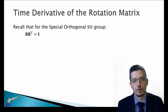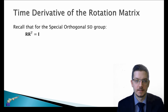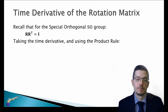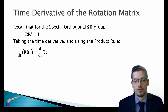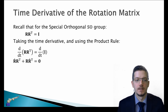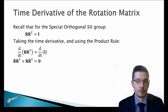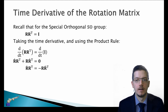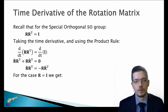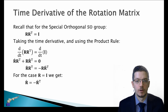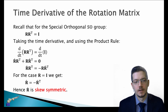Recall that for the special orthogonal group, R times R transposed is the identity. Taking the time derivative and using the product rule, we get d/dt of R times R transposed equals d/dt of the identity. So R_dot times R transposed plus R times R_dot transposed equals zero, since the derivative of the identity matrix is zero. Rearranging, we get R_dot R transposed equals negative R R_dot transposed. For the case where our rotation is the identity matrix, we get R_dot equals negative R_dot transposed, meaning the time derivative of the rotation matrix is skew symmetric.